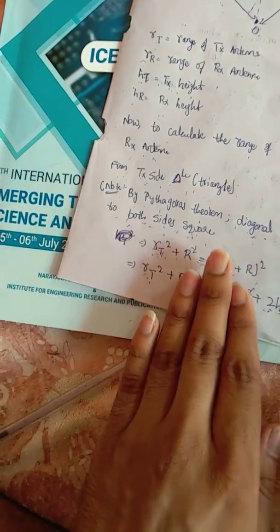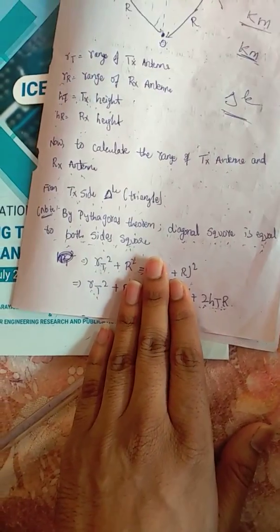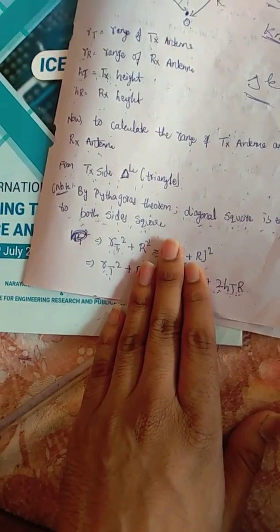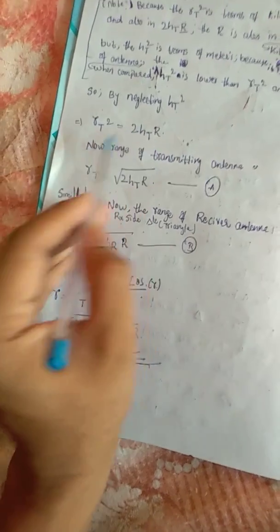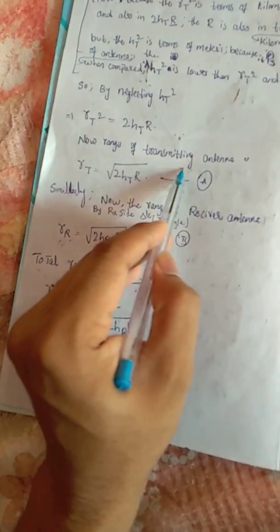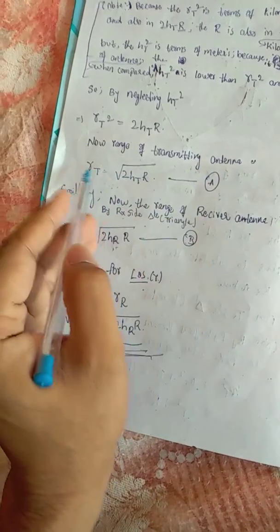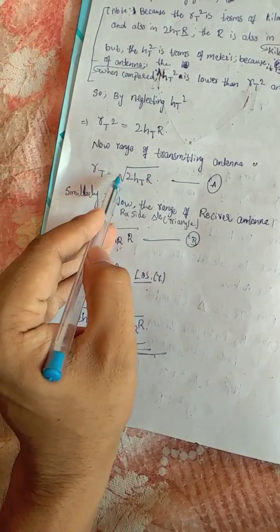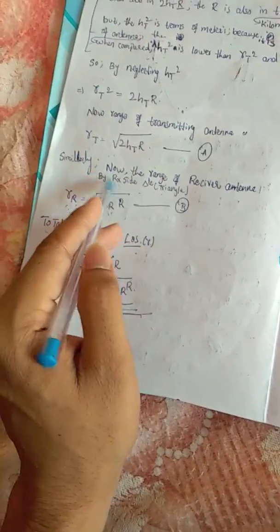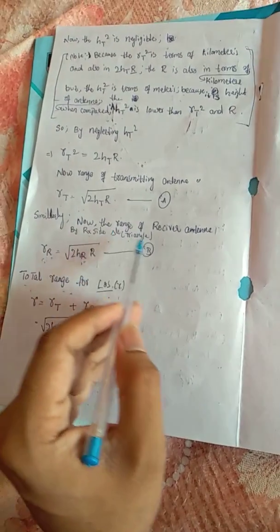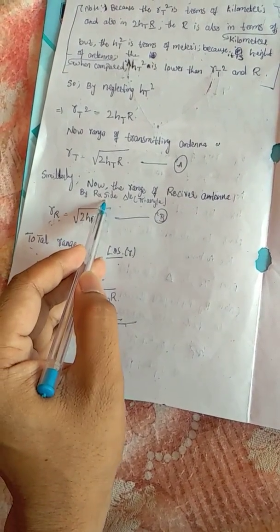By neglecting HT squared, the expression becomes RT squared equals 2·HT·R. Therefore, the range of the transmitter antenna RT equals the square root of 2·HT·R. This is equation one.